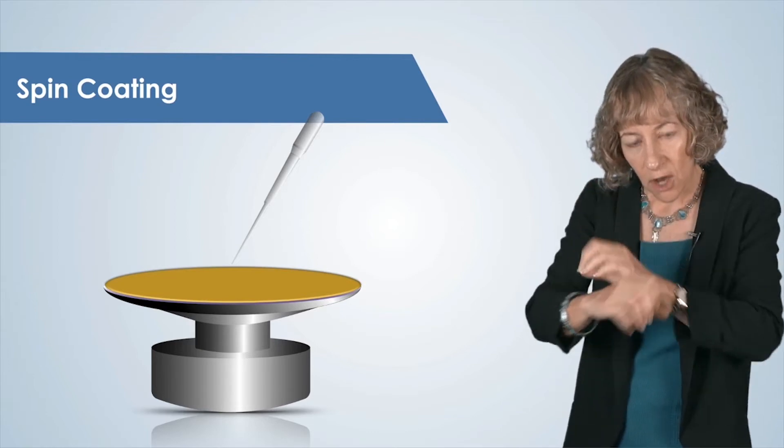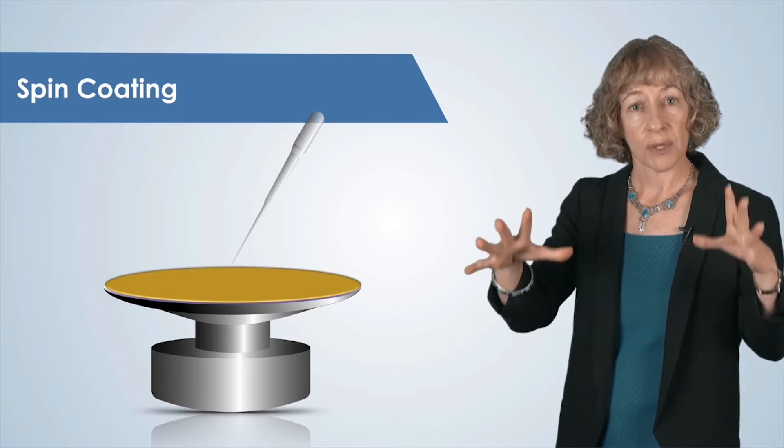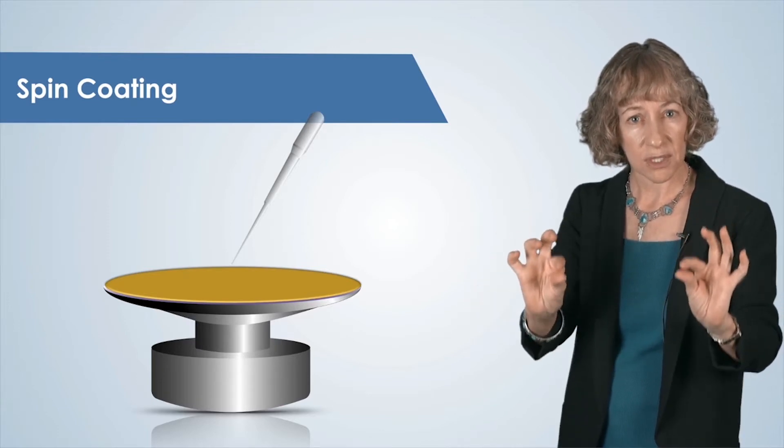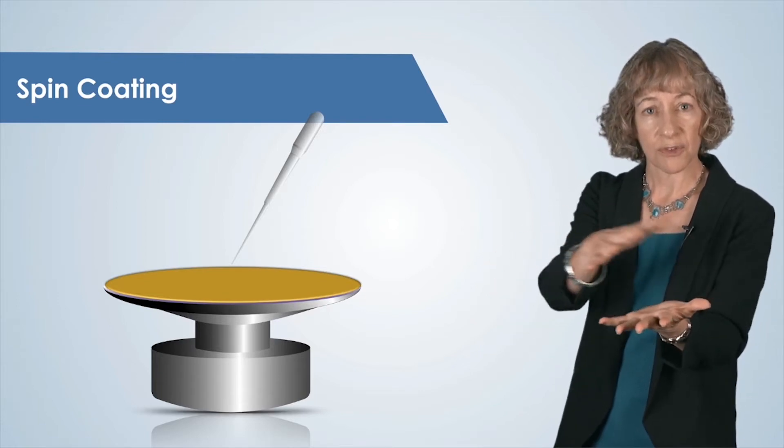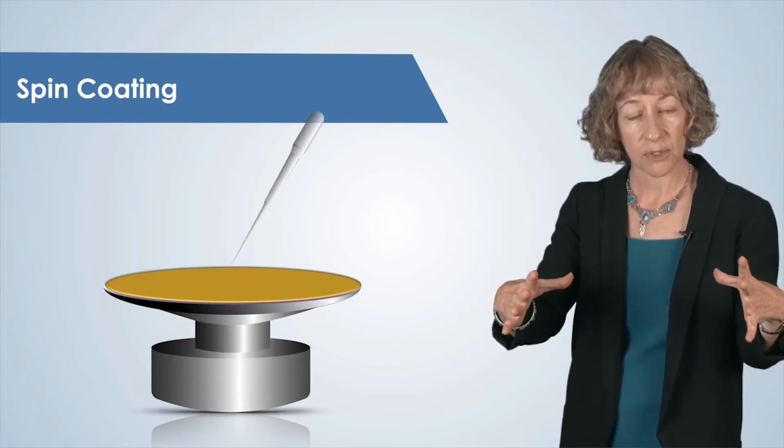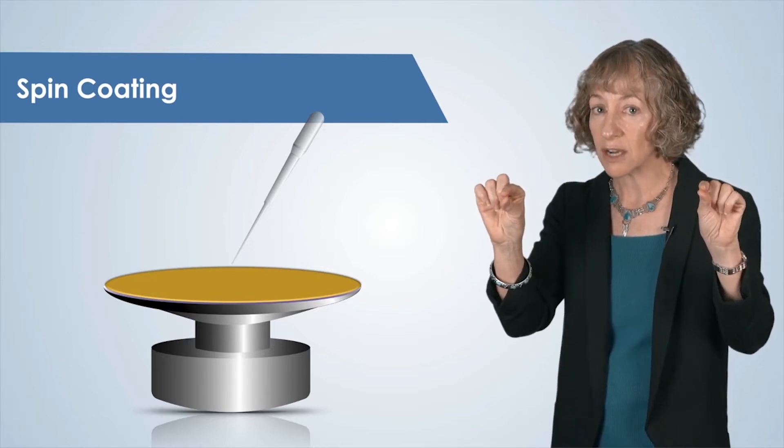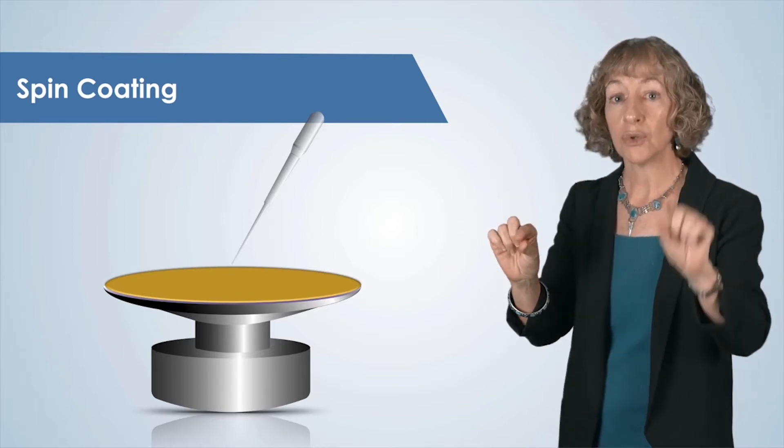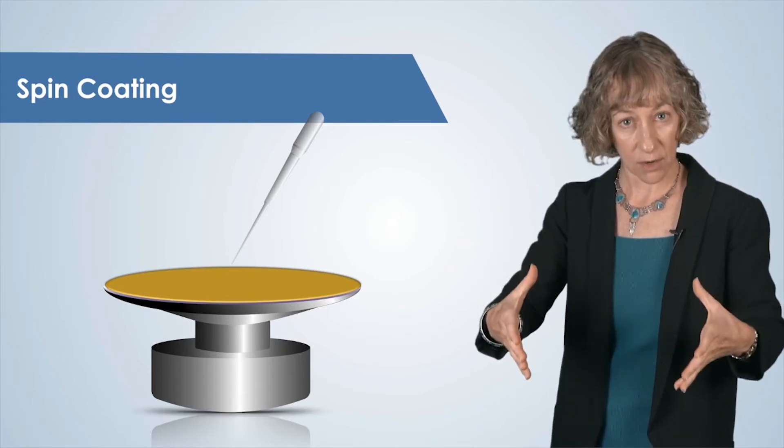This spinning process causes the liquid polymer to spread evenly over the wafer, forming a uniform, thin photoresist film. This is important for high yield of our transferred pattern across the entire substrate, because the uniformity of that photoresist thickness across the entire substrate will ensure that our pattern is transferred accurately across the entire wafer.